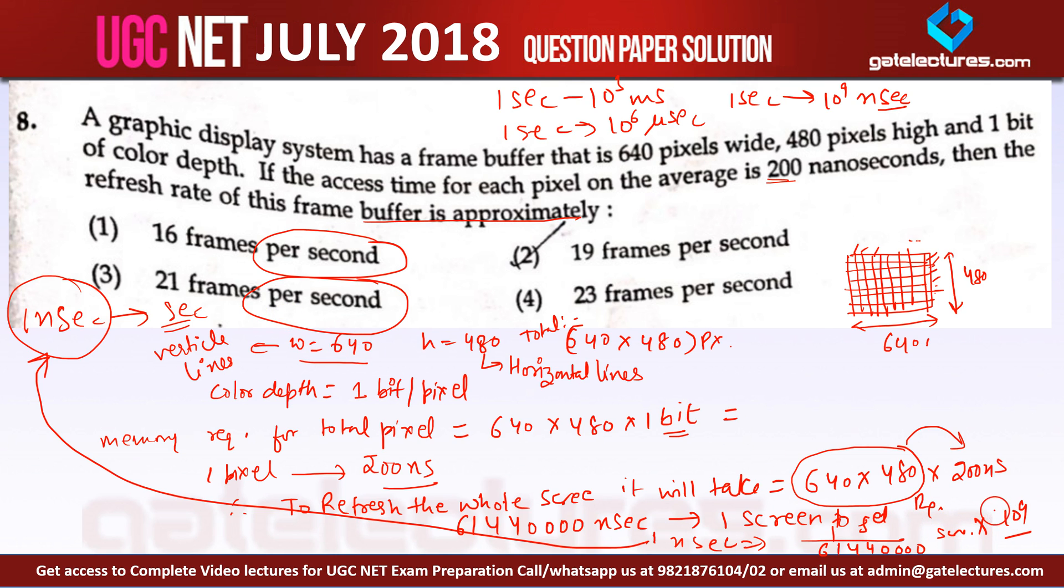Which is very close to 16 screens per second. Remember we are not getting a perfect answer. We are getting an answer which is 16.27 frames in 1 second, which is near to 16 frames per second. So for this question the correct answer is option number 1.